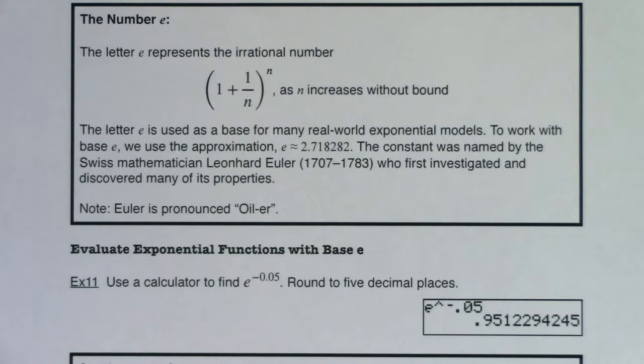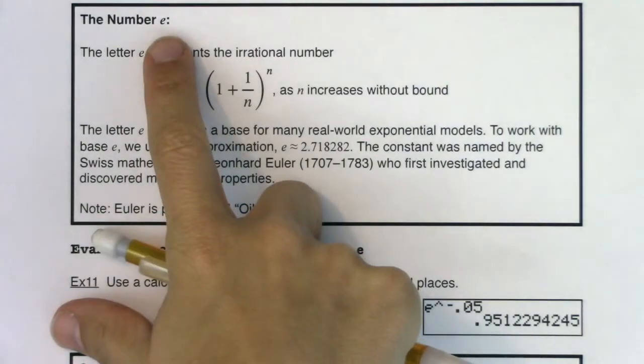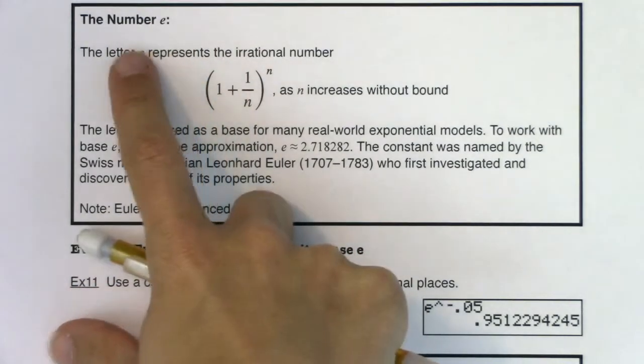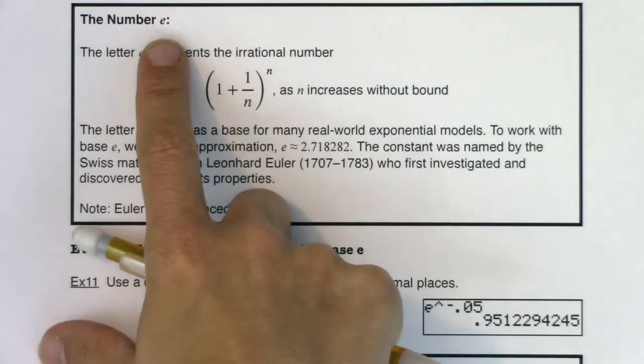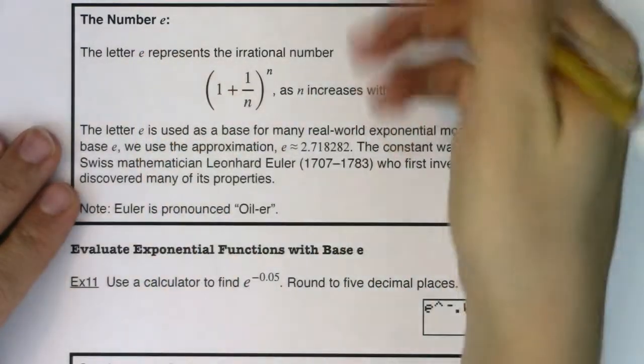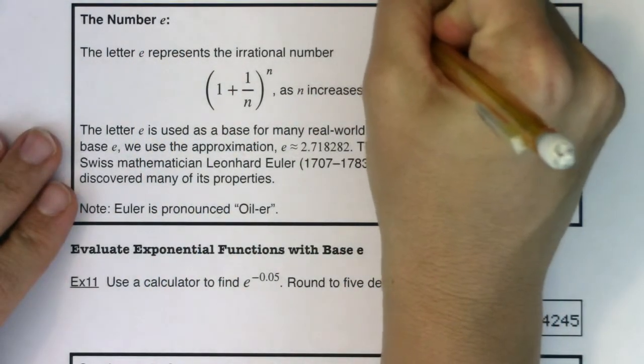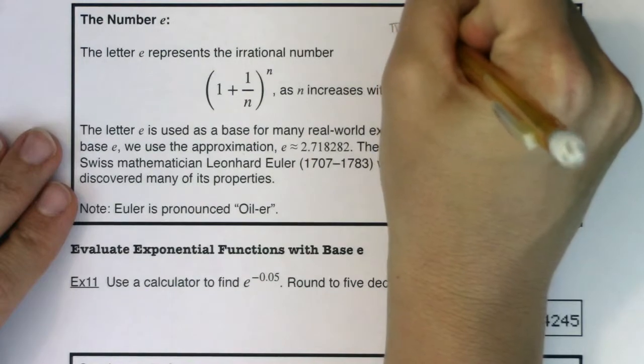Hey, Math 31. I want to introduce you to the number e. E might look like a variable because it's a letter, but it's actually a number. This is a constant in math. It's the second most popular constant we have. The most popular constant we have is pi. People know pi.